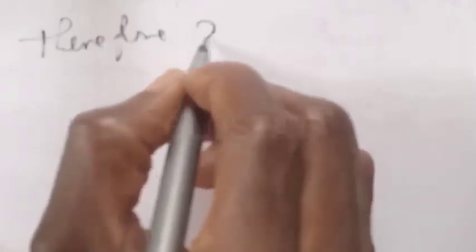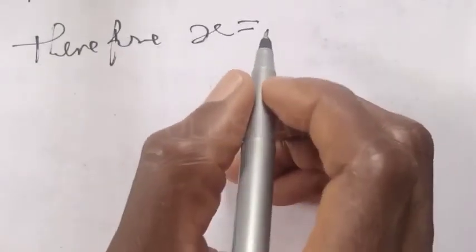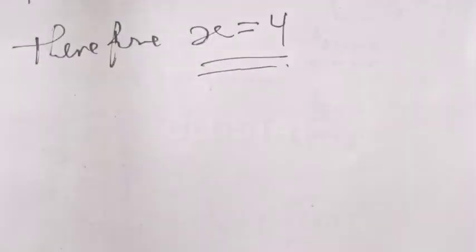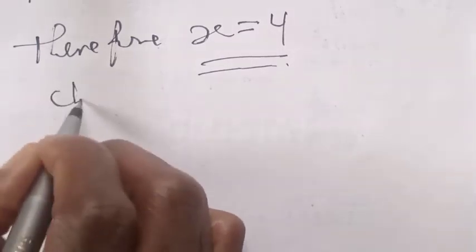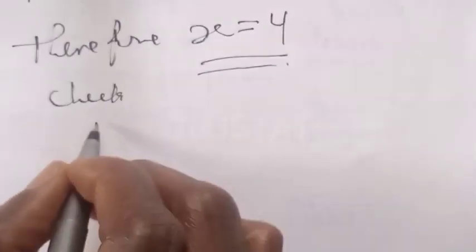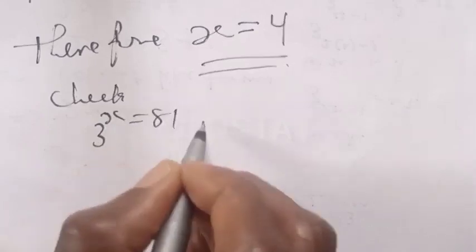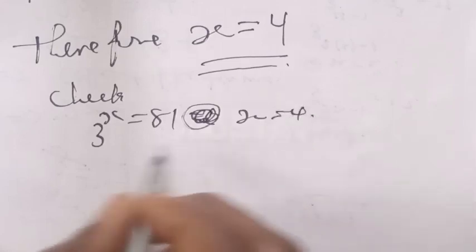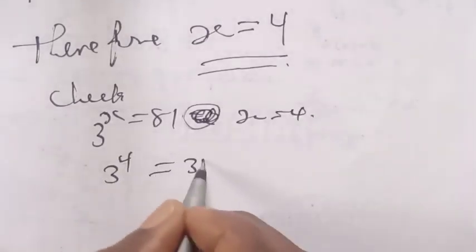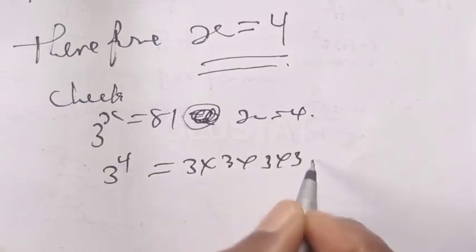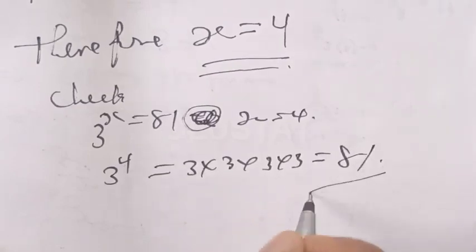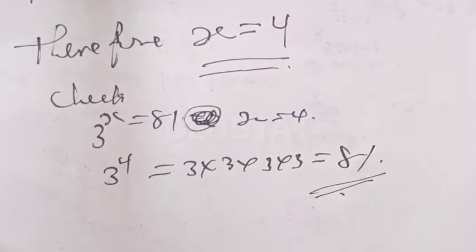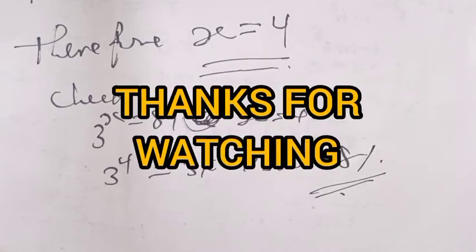Therefore s is equal to 4. Final answer. Let's check: 3 raised to power s is equal to 81, at s equal to 4. 3 raised to power 4 is equal to 3 times 3 times 3 times 3, which is equal to 81. You can see that our answer is right. Please don't forget to like, share, comment, and subscribe. Thank you.